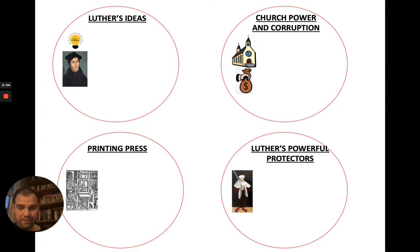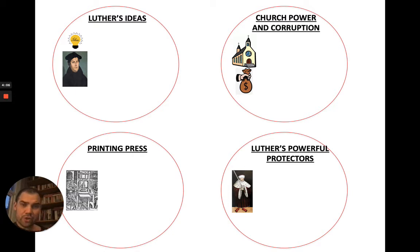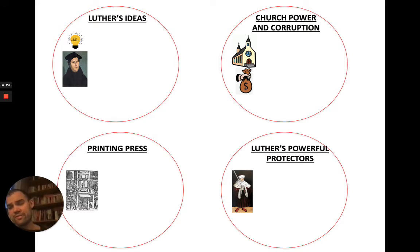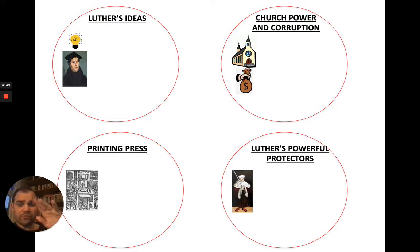Luther's ideas were radical because they challenged the Catholic Church, which taught that people needed the church's rituals, authority, and guidance to achieve salvation. Church power and corruption was also a massive factor — people were incredibly frustrated and angry with the church because of the sale of indulgences, pieces of paper that allegedly forgave your sins if you gave money to the church. Also, 10 to 15 percent of people's income went to the church as tithes, and the Catholic Church controlled a large amount of land.